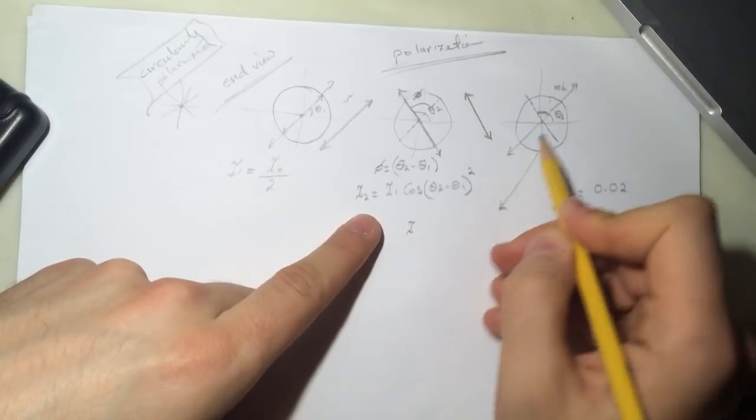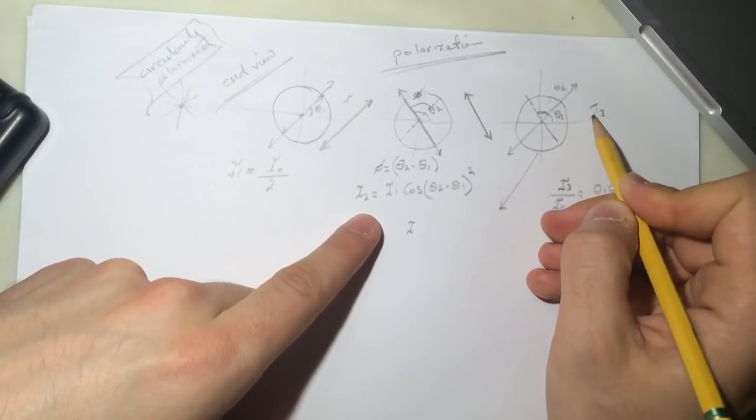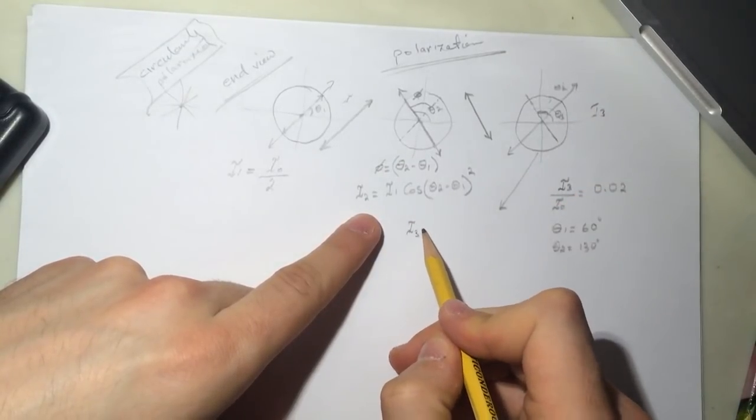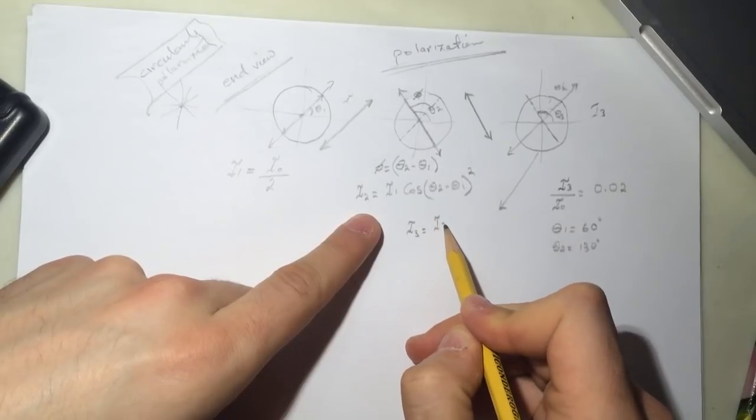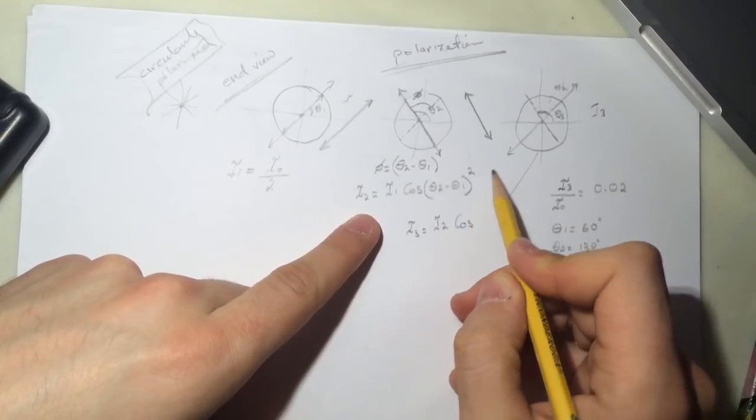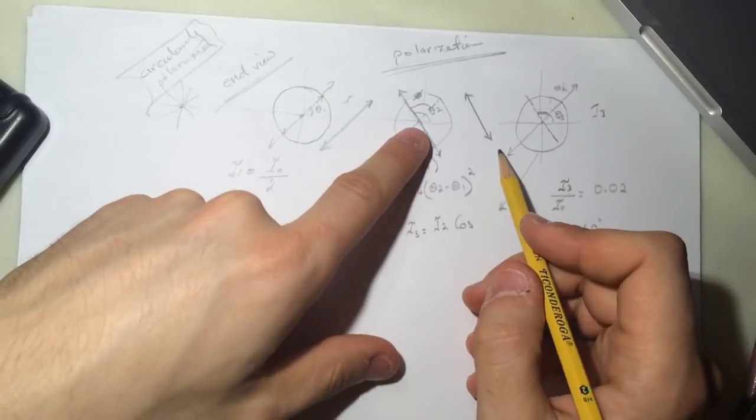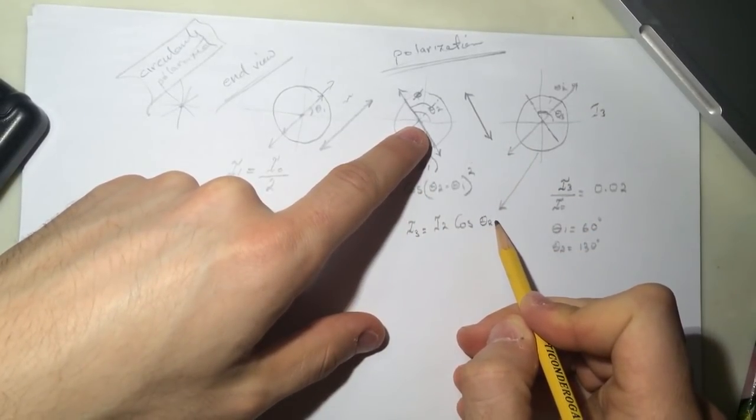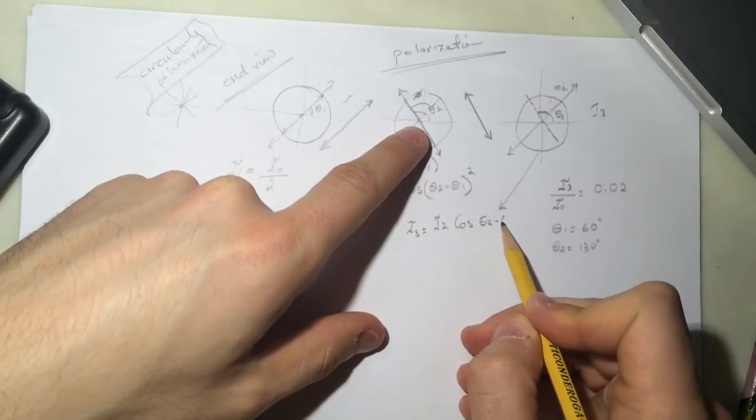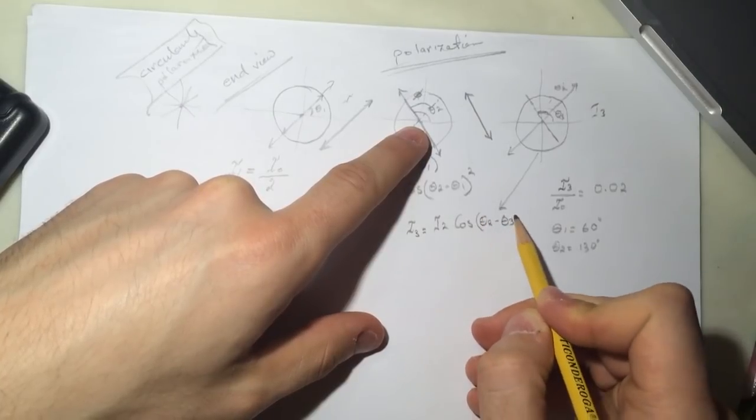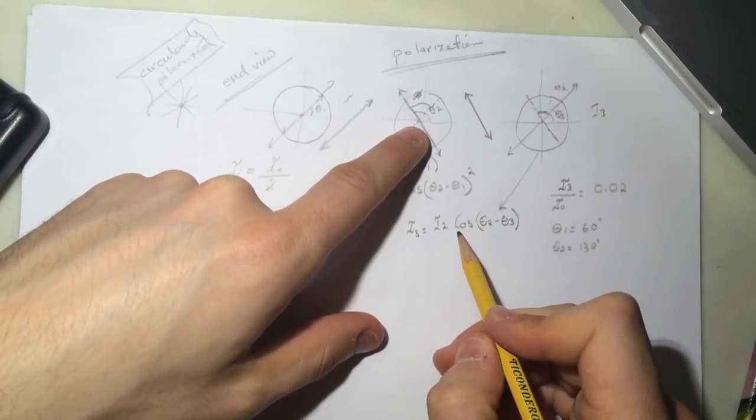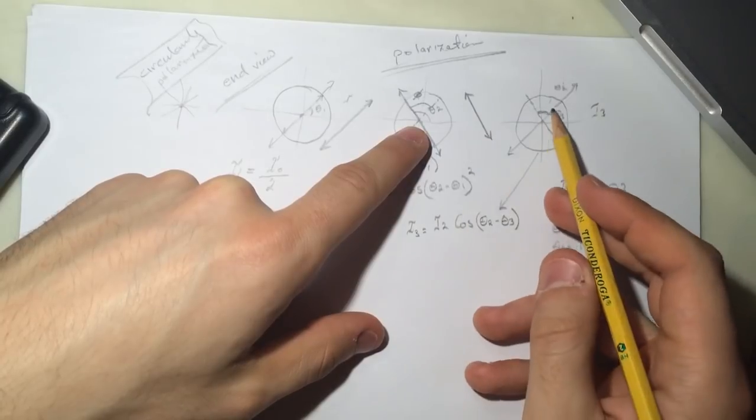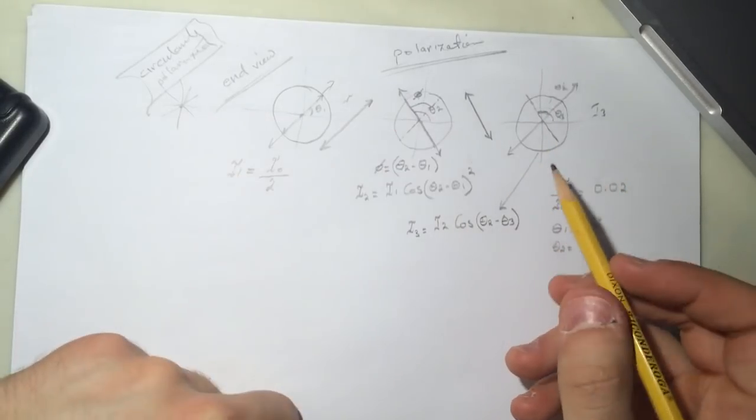So now i3, i3 is what goes through this. So i3 will be equal to i2 cosine of the theta 2, minus theta 3. Theta 2 minus theta 3.